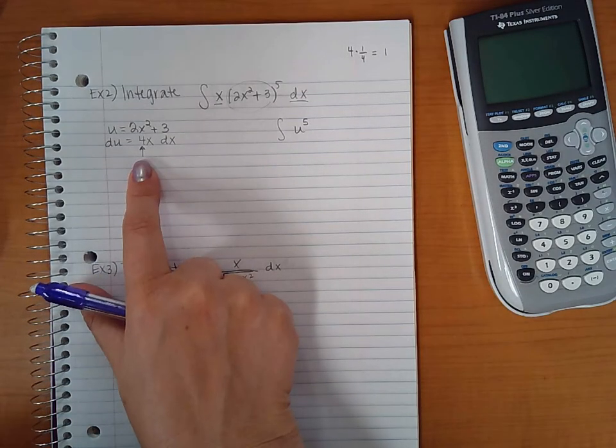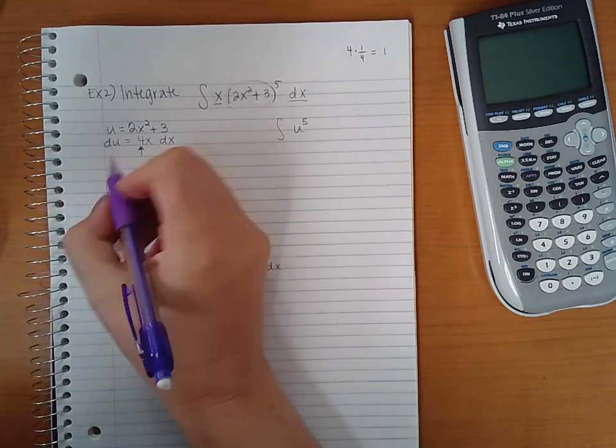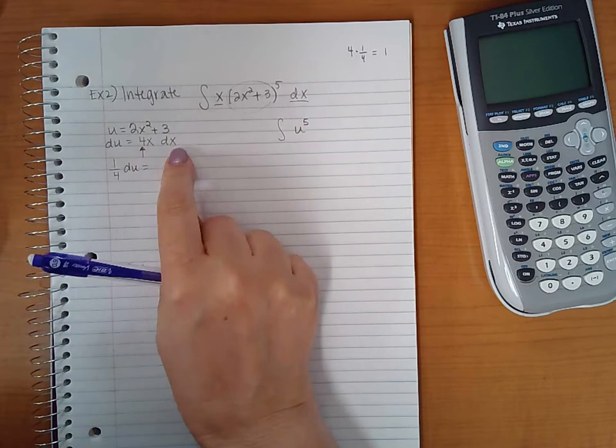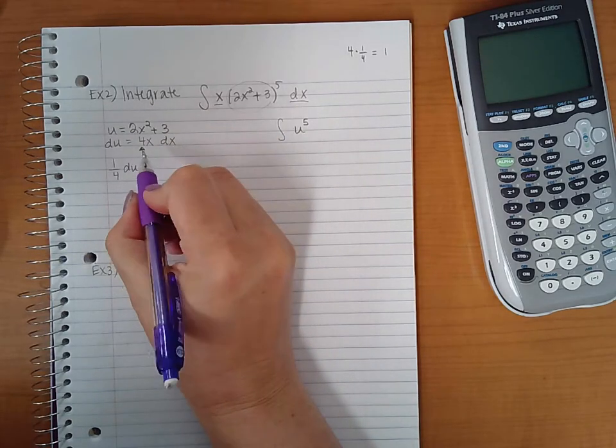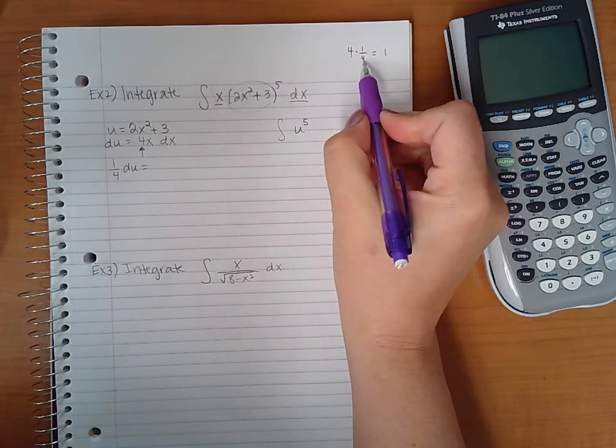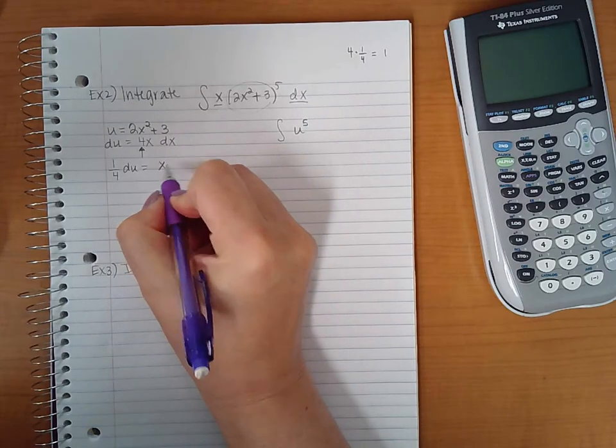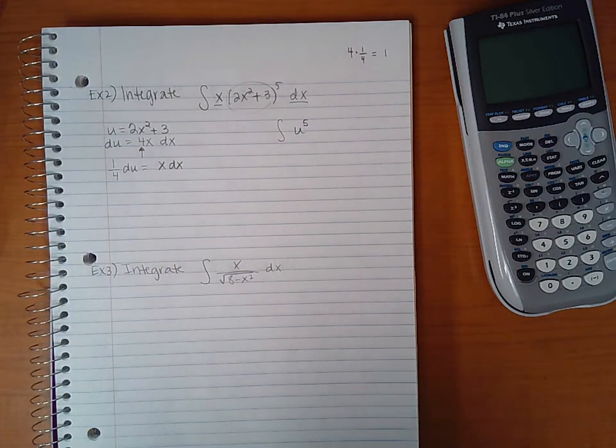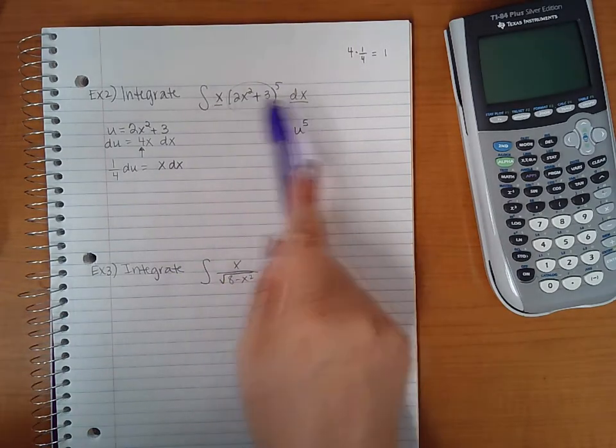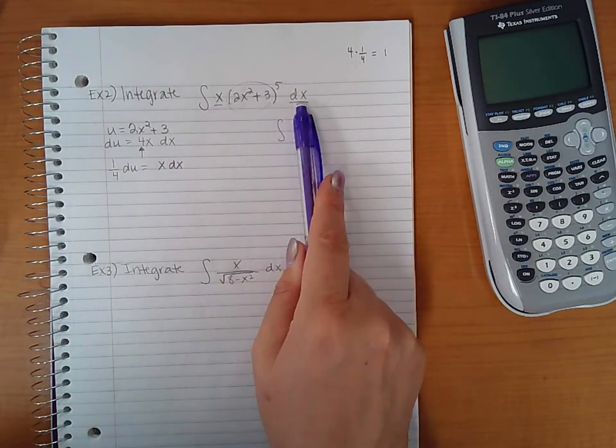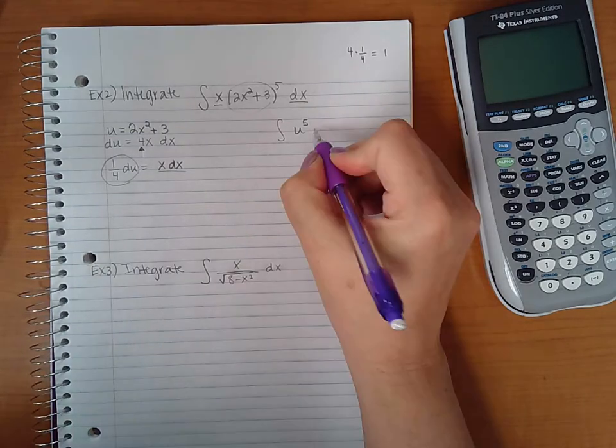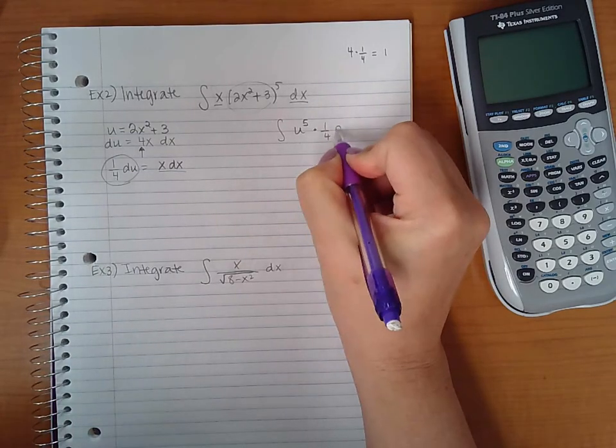So essentially what I'm going to do is I'm going to multiply this side by 1 fourth. And I'm going to multiply this side of the equation by 1 fourth. But as we know here, 4 times 1 fourth is just 1. So I end up with x dx all by itself. Now I know what to substitute in for x dx. Instead of x dx, I'm going to substitute in 1 fourth du.